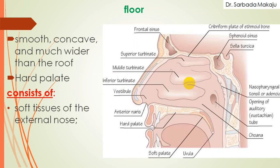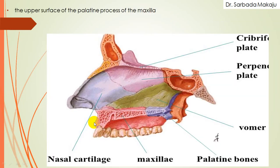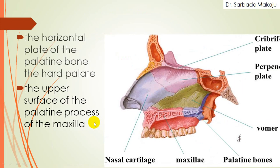Now the floor of the nasal cavity. It is smooth and concave, and it is much wider compared to the roof. This floor is formed by the hard palate, and also a small part is formed by the soft tissue of the external nose. The floor is formed by two bones: the horizontal plate of the palatine bone, which forms the hard palate, and the upper surface of the palatal process of the maxilla. Together they form the hard palate and the floor of the nasal cavity.